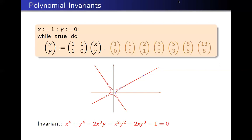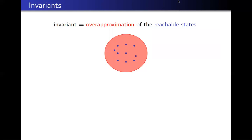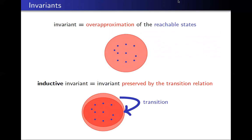Such an invariant is useful: given some point in the plane, if I evaluate the invariant at that point and it's non-zero, I know instantly that the point is not reachable without executing the programme. More precisely, an invariant in some definitions is merely an over-approximation of the reachable states. More useful in practice is the notion of an inductive invariant — a set that contains the initial programme states and is preserved by the transition relation, and by virtue of that, includes all the reachable states. This is much easier to check.